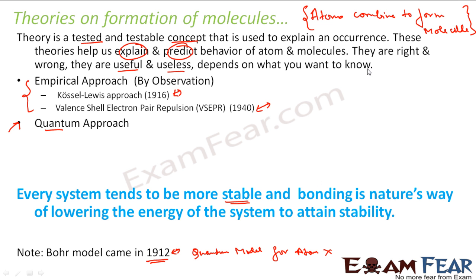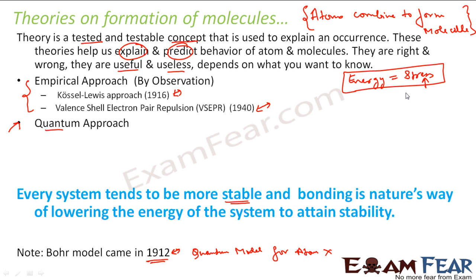The quantum model says that energy is like stress — just for you to understand it. In our life, we want to lose stress: examination stress, family stress, any kind of stress. Everybody wants to lose stress by meditation, going on vacation, or watching a movie. Similarly, atoms and molecules always want to reduce their energy — they want to reduce their stress to become stable.